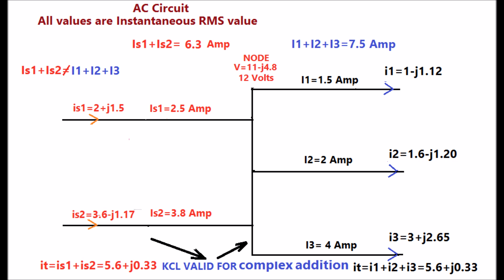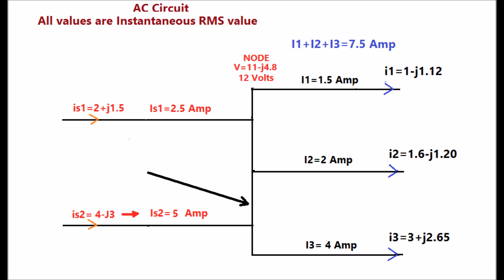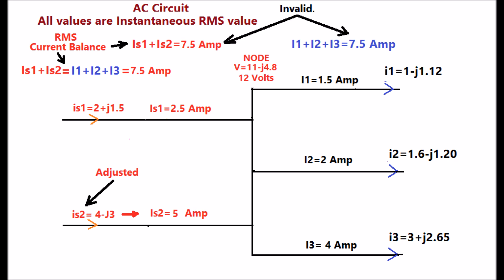Theoretically, the complex values of currents at an AC circuit node can be adjusted for RMS value balance at this node to prove KCL. But it is invalid and practically not possible.